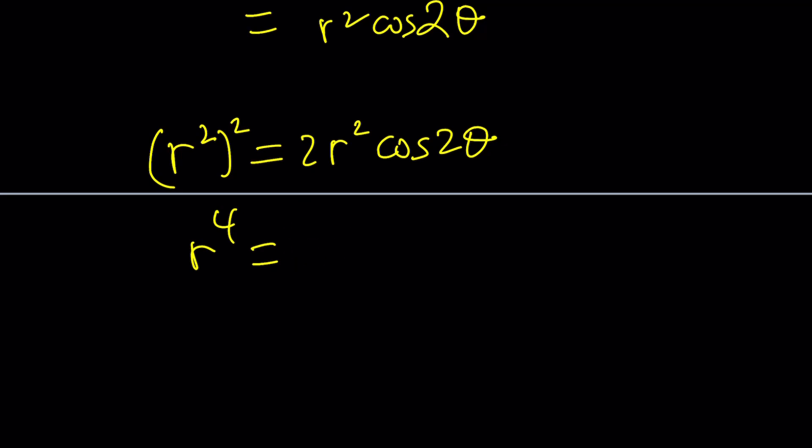And then we can kind of write it like this. And then divide both sides by r squared. This is going to cancel out two of them. And then we'll get r squared equals 2 cosine 2 theta. All right. Let's go ahead and take a look.